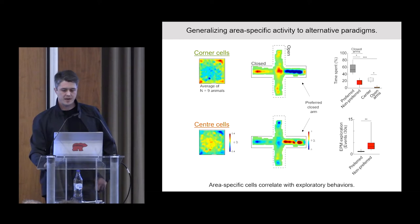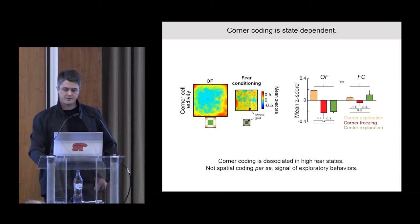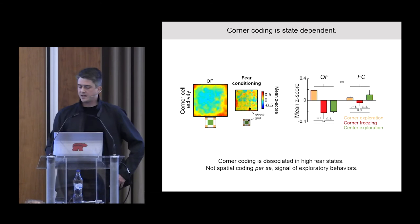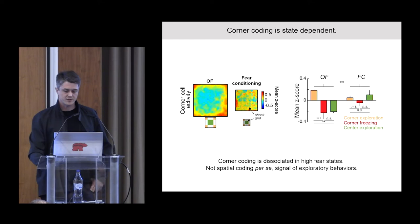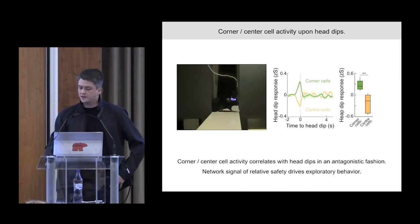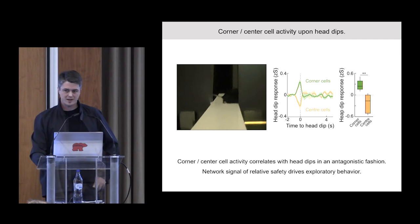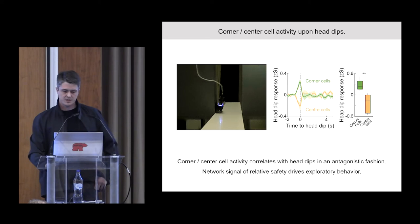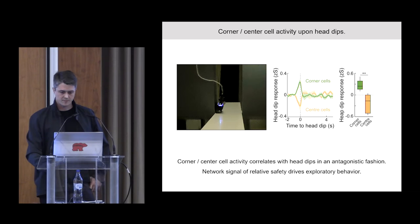This demonstrates that these area-specific cells actually correlate with exploratory behaviors. Going back to the open field behavioral data, these animals are highly explorative in the corners — they're not sitting there passively. This notion is further supported by the finding that corner coding is state-dependent: when we looked at spontaneous freezing episodes in open field corners or during the fear conditioning session, we find that corner coding is dissociated in high fear states. We think these cells signal exploratory behaviors rather than spatial location per se. Indeed, during head dips on the open arms of the elevated plus maze — a super exploratory behavior — corner and center cell activity correlates with head dips in an antagonistic fashion, which we believe represents a network signal of relative safety that drives exploratory behaviors.